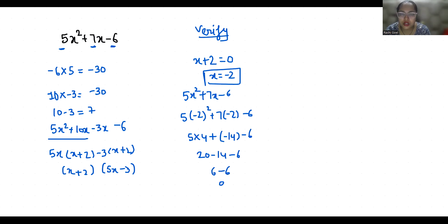So x equals minus 2 is verified. Now 5x minus 3 equals 0. So 5x equals 3.